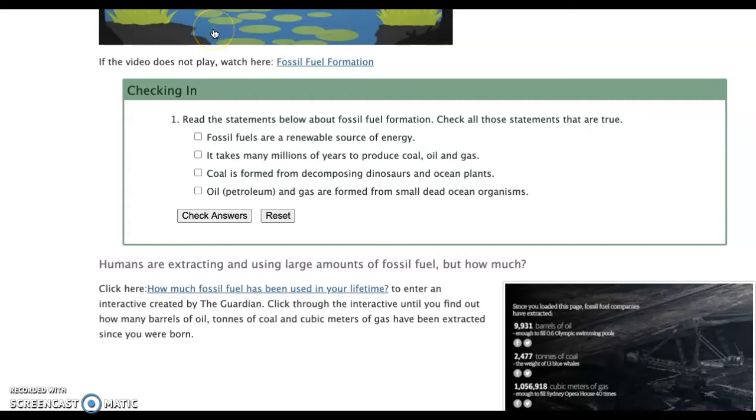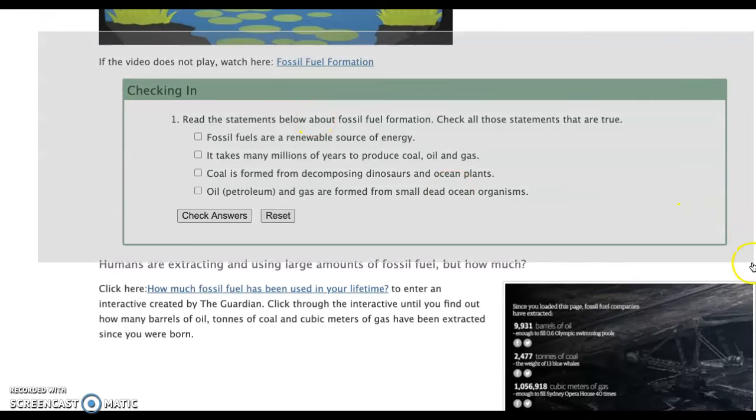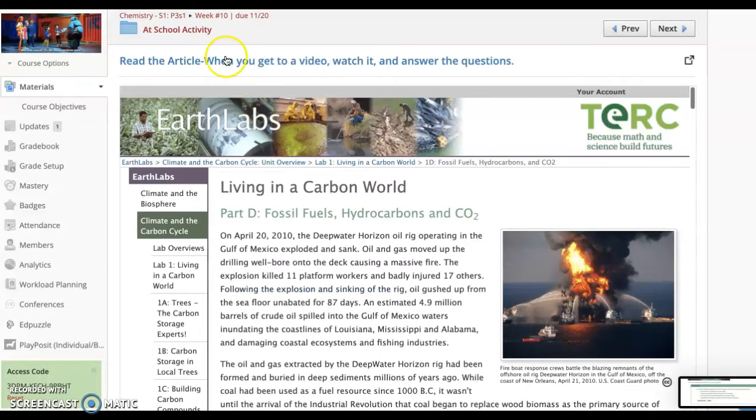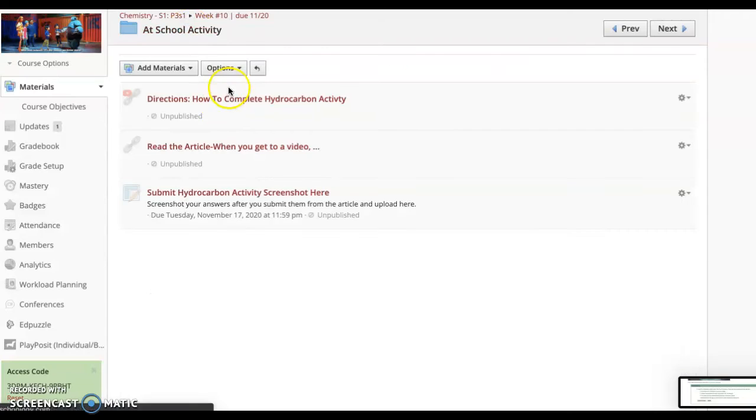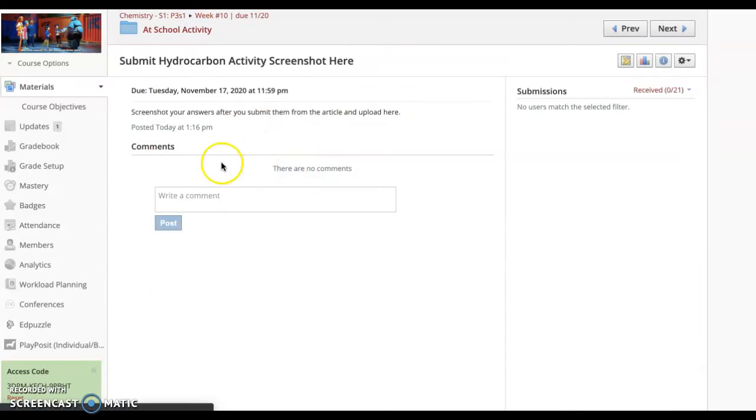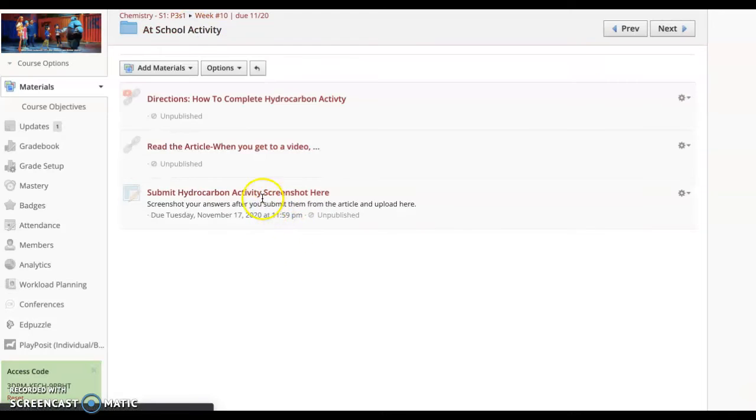I would screenshot this with my correct answer, obviously. And then I'd go back to the at school activity. And then right here, I would add a submission and upload the photo. So you're just screenshotting your answers after you submit them from the article, once you get them 100% correct.